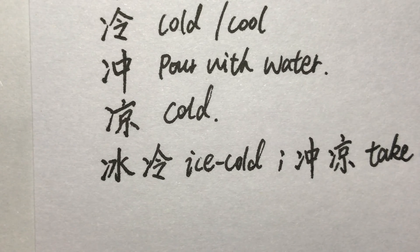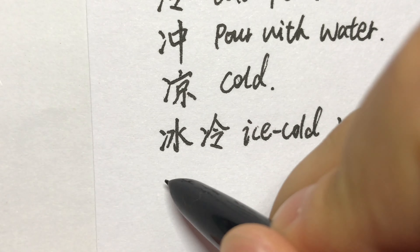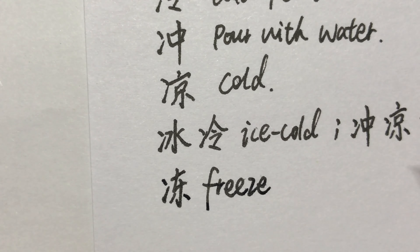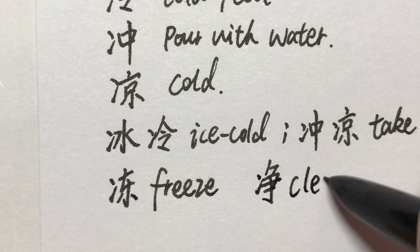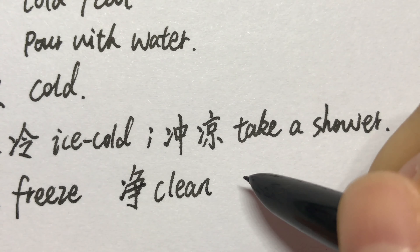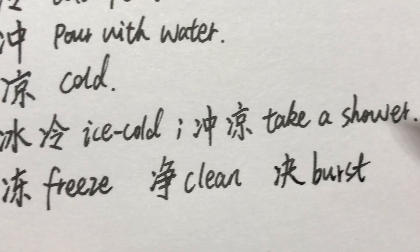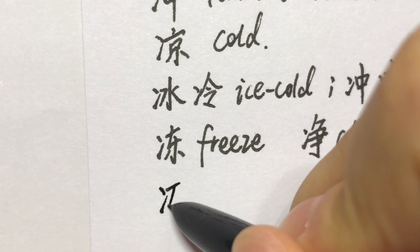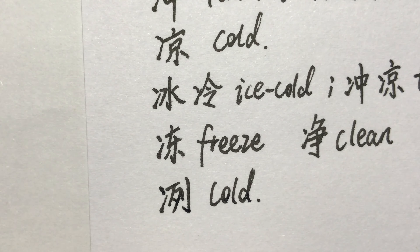Here are some other characters with 两点水. For example: 冻 (freeze), 净 (clean), 决 (burst), and 冻 (cold). Each of these characters carries the 两点水 radical on the left side.